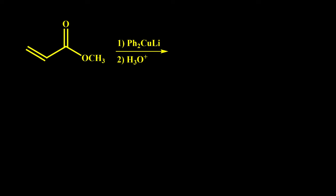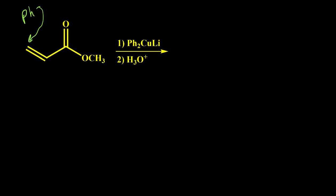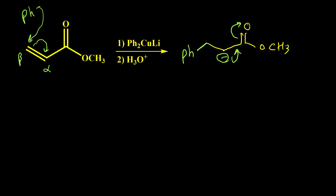I'm going to start with Gilman reagents. When we have organocopper compounds, we can simply assume that the R group is negative and it can attack the beta position. In this example, the organic part is phenyl (benzene ring), and only one of these groups attacks the carbon. So one phenyl is going to attack the carbon at the beta position, then push this bond to the alpha carbon. As a result, we have our ester with phenyl on the beta position, and the alpha carbon carries a negative charge — which can make resonance to give the enolate ion.